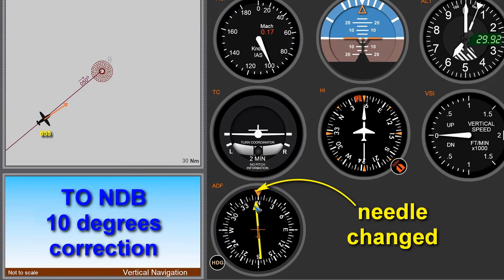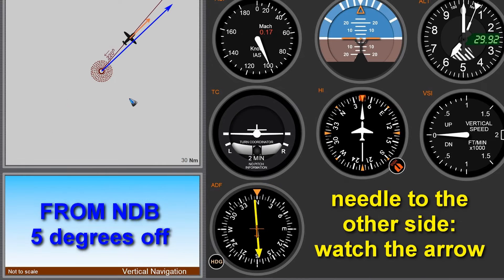I did a 10 degree compensation to find my original bearing back, but that shows on the needle that I am now on the other side, which can be a little confusing. The confusion with an NDB is even more when flying away from it, because the needle deflects inverted — the other way around. I always look at the arrow of the needle, because for the compensation you have to fly to the needle — or in some cases away from the needle but still toward the arrow. All in all, the NDB is prone to errors and confusion.